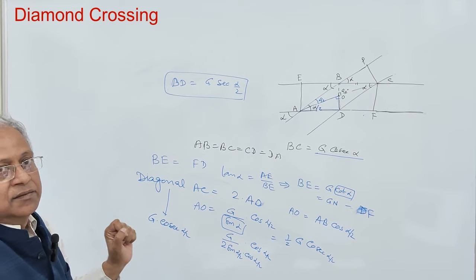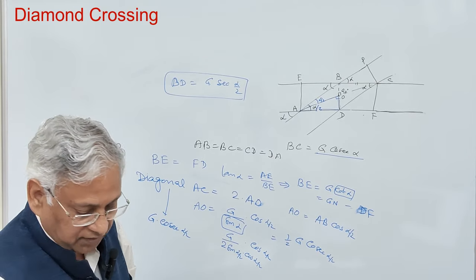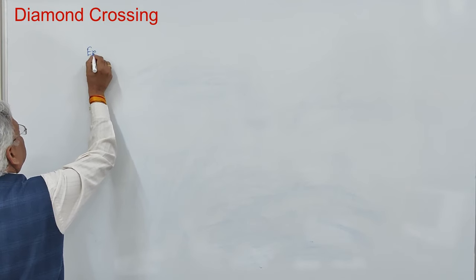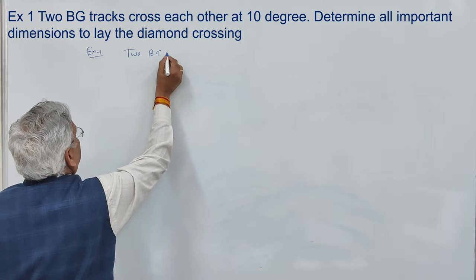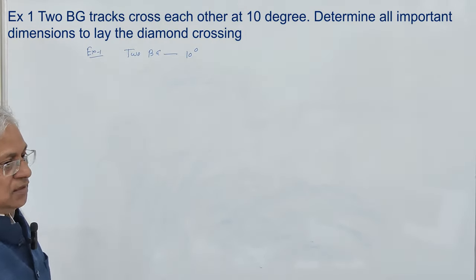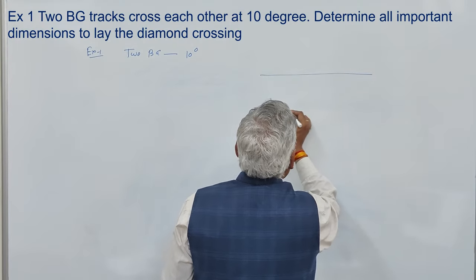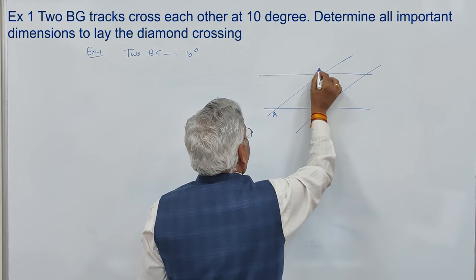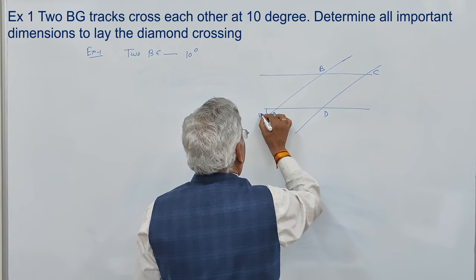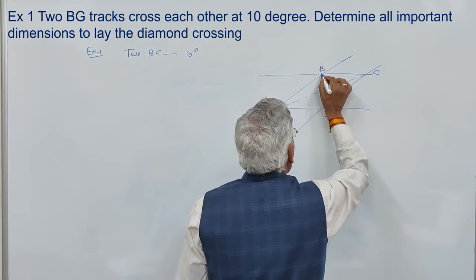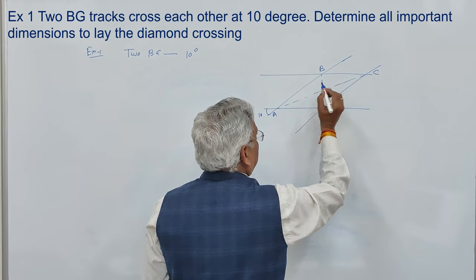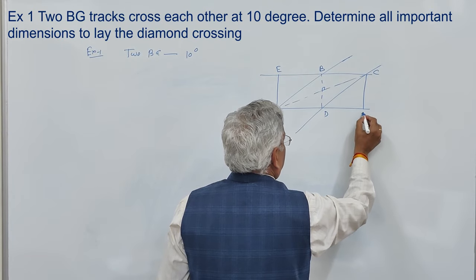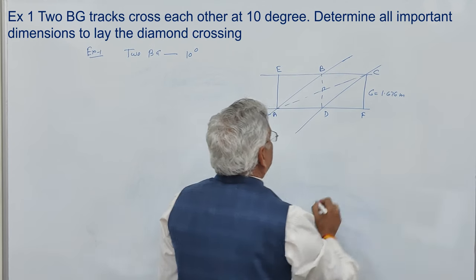Now let me take two examples. Example one: two BG tracks cross each other at 10 degrees. Determine the important dimensions of the diamond. Since both tracks are BG, the gauges are the same. The diamond is again ABCD with angle alpha equal to 10 degrees, the diagonals intersect at 90 degrees in a rhombus, E and F are the foot-points, and the gauge is 1.676 meters.